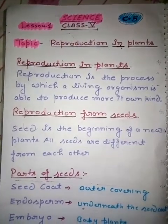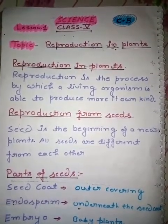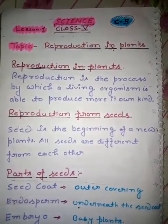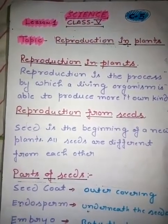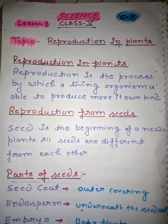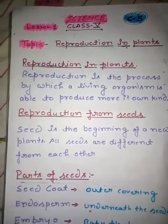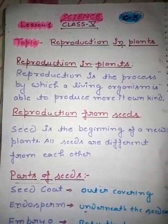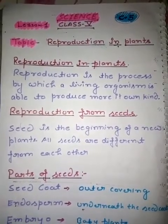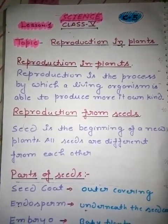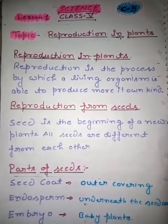Hello guys, this is Rajesh Gaur and today we discuss about the topic: Reproduction in Plants. This is the first chapter of Class 5. So let's begin. Today's topic is reproduction in plants — how reproduction in plants happens, what it is. In the previous class you have already learned about the reproduction of seeds a little bit, so today we discuss about reproduction in plants, reproduction from the seed, and the parts of the seed.